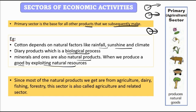Since most of the natural products we get are from agriculture, dairy, fishing, and forestry, this sector is also called the agriculture and related sector. It depends on natural resources. For example, onions and spices are natural resources we use for food, cotton for clothes, and so on.